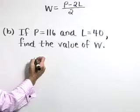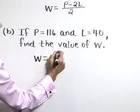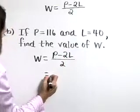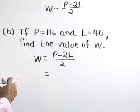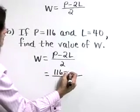So let's use this form that we have from part A, W is equal to P minus 2L over 2, and let's substitute the given values. P is 116 and L is 40.